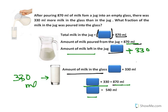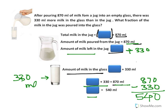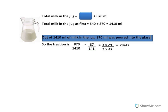So this rectangular unit can be shown by 870 minus 330. 870 minus 330 becomes equal to 540 ml. So the amount of milk in the jug at first was this rectangular unit plus 870 ml.